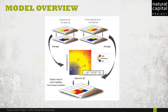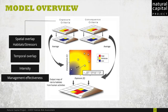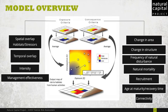This schematic depicts the general overview of the model. The HRA model produces information about risk at two scales and with several types of outputs. We first determine the likelihood of exposure of the habitat to a stressor, such as the spatial overlap, temporal overlap, stressor intensity, and effectiveness of management, and the consequence of the exposure, such as a change in area, change in structure, frequency of natural disturbance, natural mortality, recruitment, age at maturity or recovery time, and connectivity.